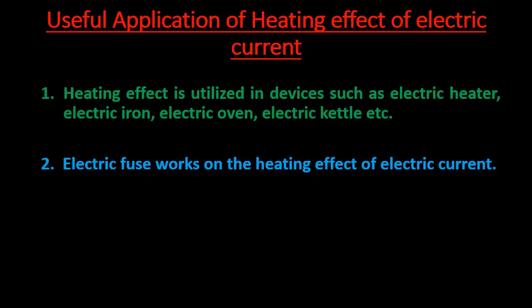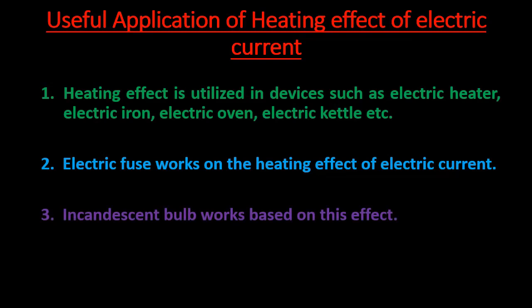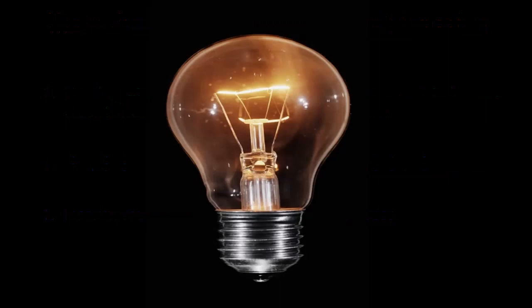The third useful application of heating effect is the incandescent bulb, which works based on this effect. The main part of an incandescent bulb is a wire made of tungsten, which has very high resistance. When current is supplied to the bulb, it flows through the tungsten wire; the high resistance causes the wire to heat up excessively, and when excessively heated it emits light used for lighting the home. This is how the incandescent bulb works based on the heating effect of electric current.